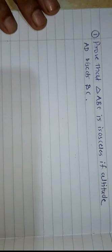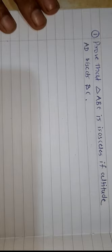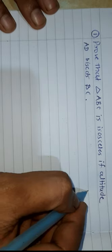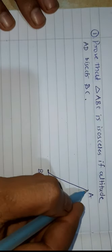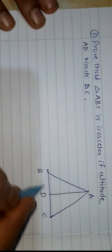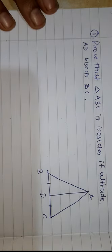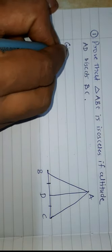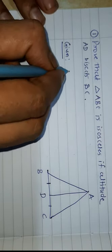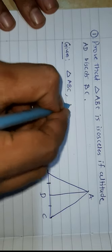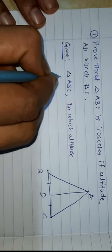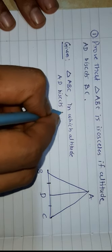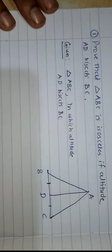The first problem from today's worksheet is: prove that triangle ABC is isosceles if altitude AD bisects BC. So triangle ABC and altitude AD bisects BC. Altitude AD bisects BC means BD is equal to DC. First we write in the form of a theorem: given triangle ABC in which altitude AD bisects BC — that is given.